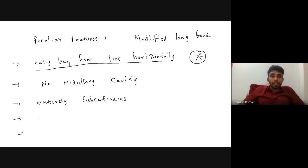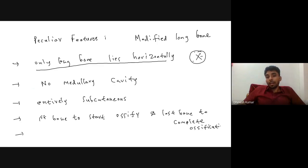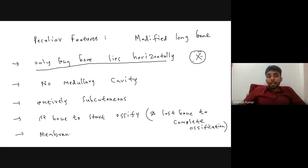Regarding ossification, the clavicle is the first bone to start ossifying in our body, and it is also the last bone to complete ossification. The clavicle ossifies mainly from membrane and partly from cartilage, which is called membranocartilaginous ossification.